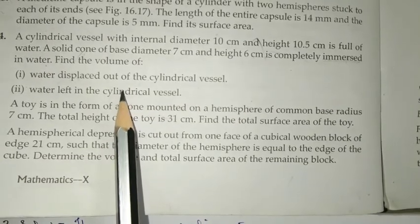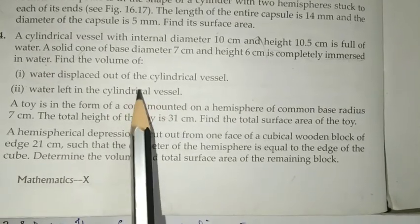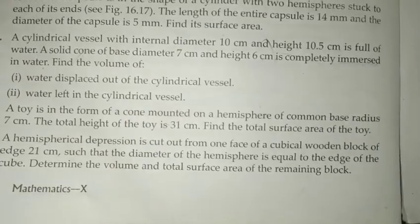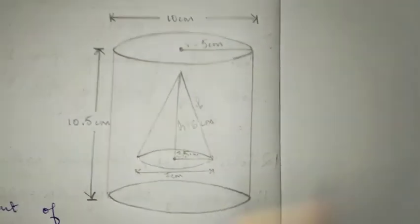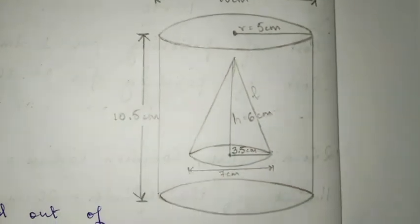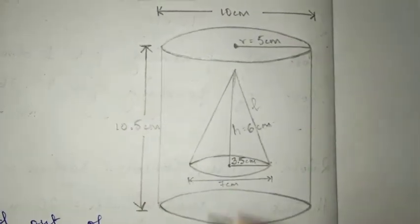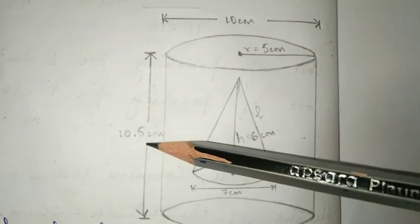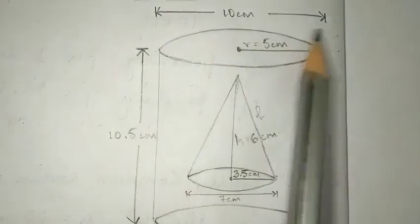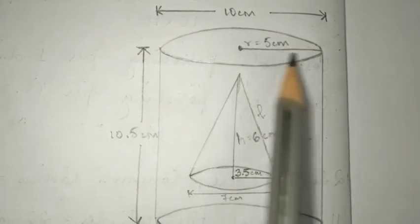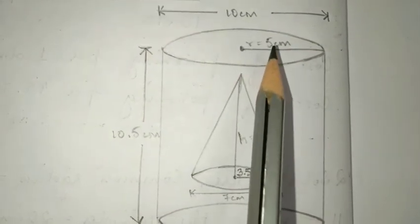So, you have to find the volume of water displaced out of the cylindrical vessel. So, before we do that, first of all, let's draw the diagram over here. Now, this is the diagram. We have a cylindrical vessel, okay? They've given us height and diameter. So, here is height 10.5 cm, right? And then, diameter 10 cm, so radius is 5 cm.